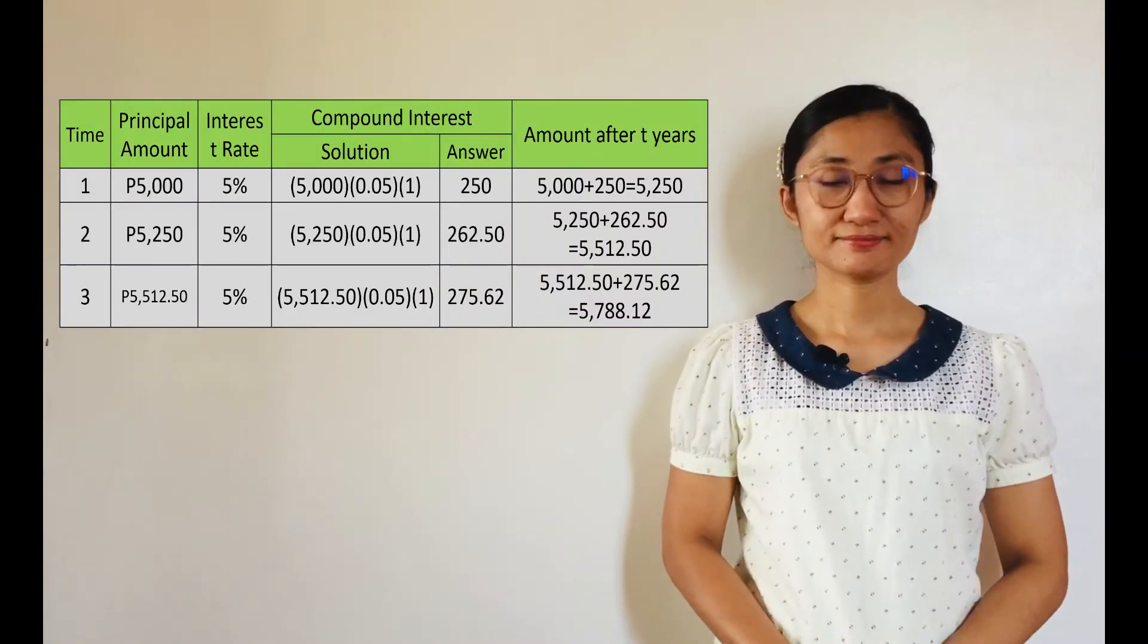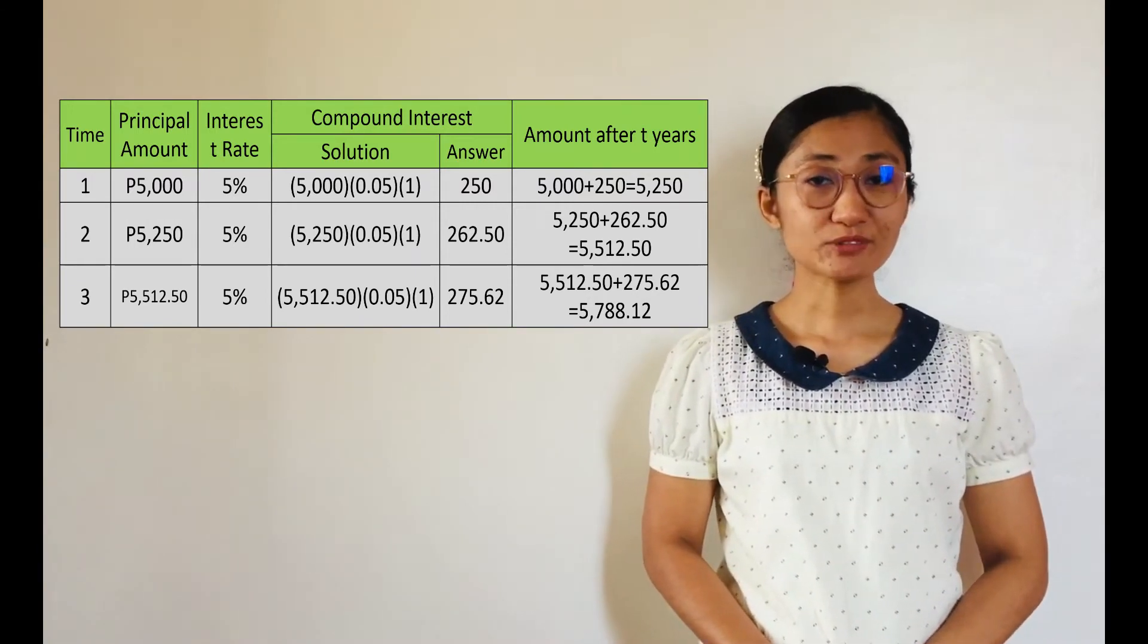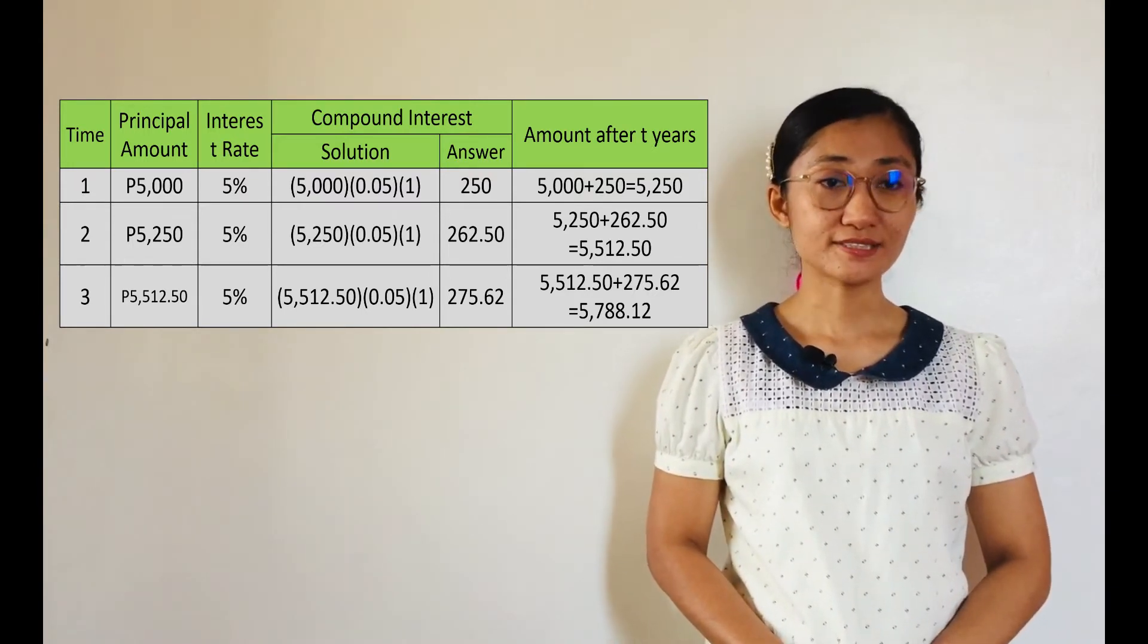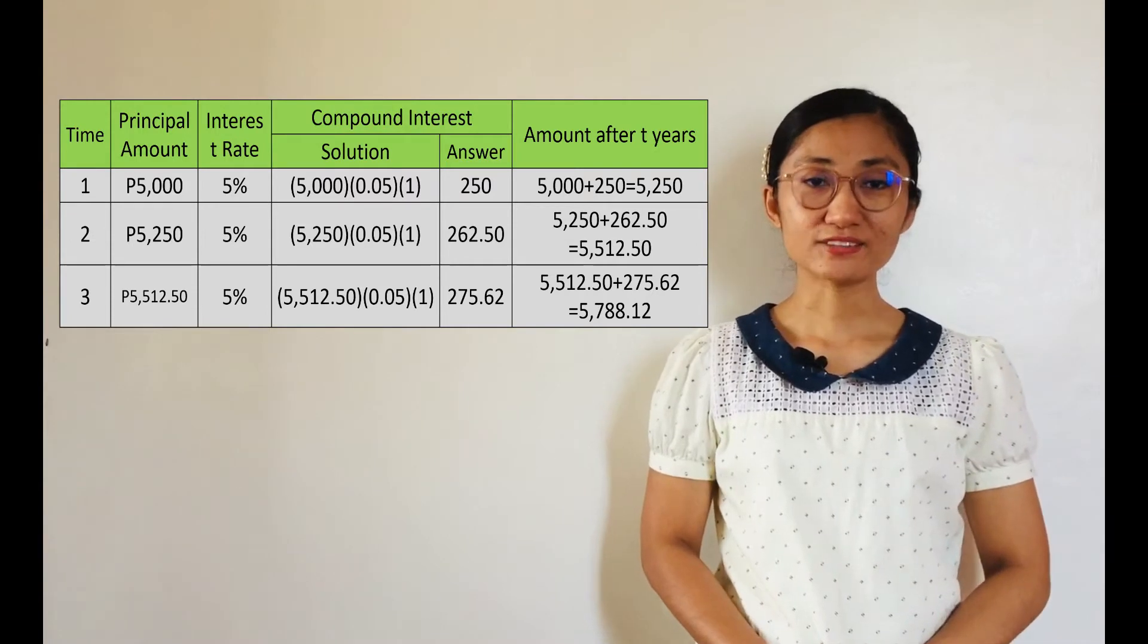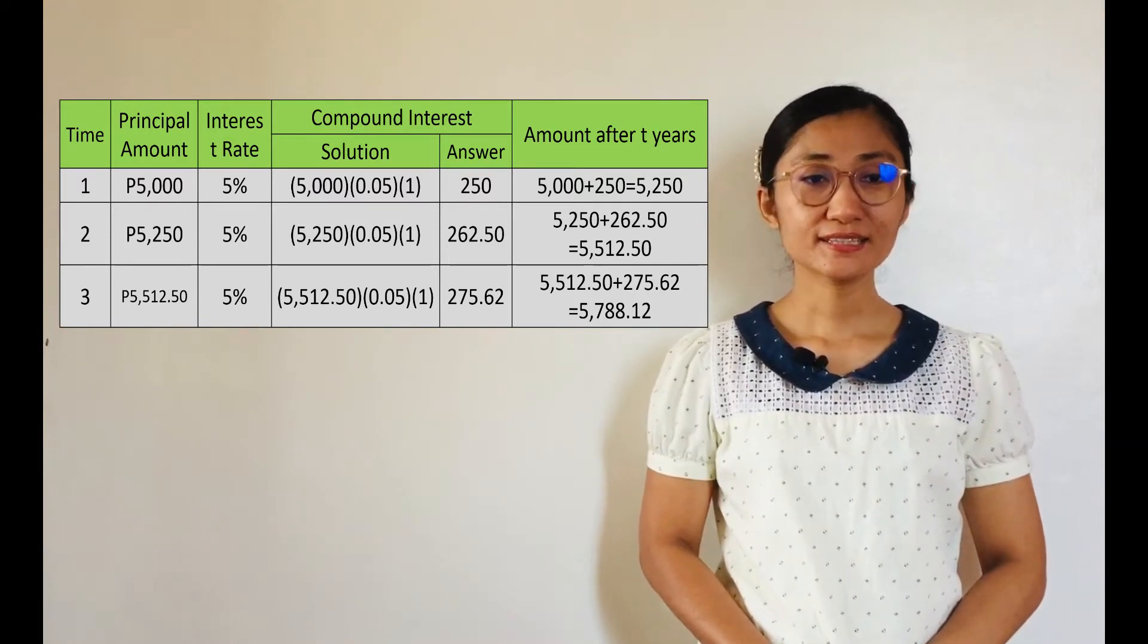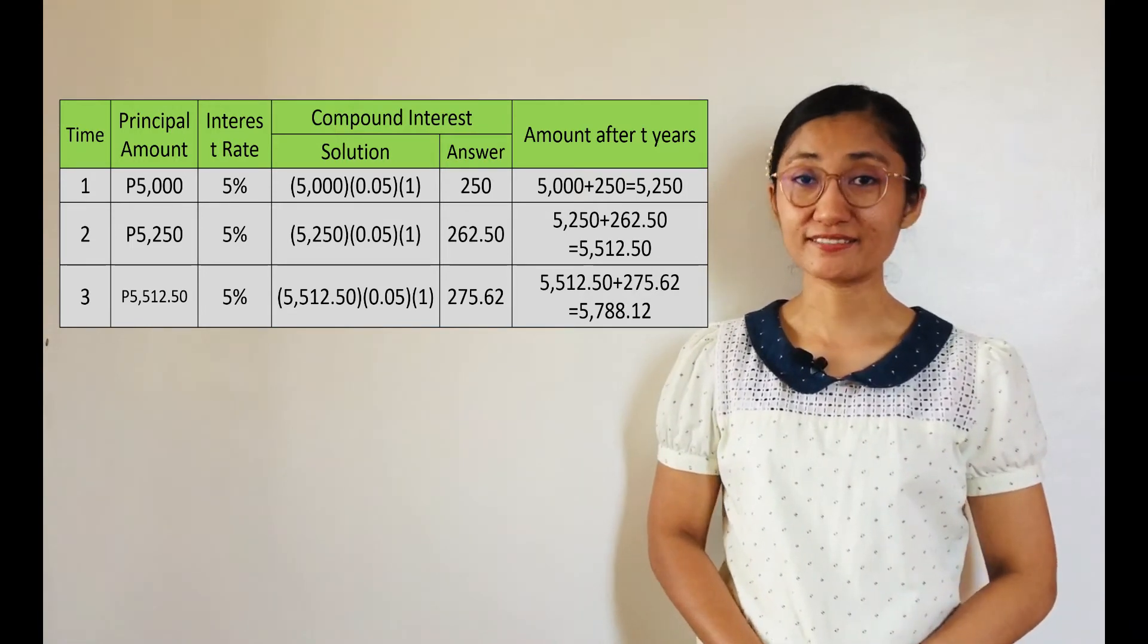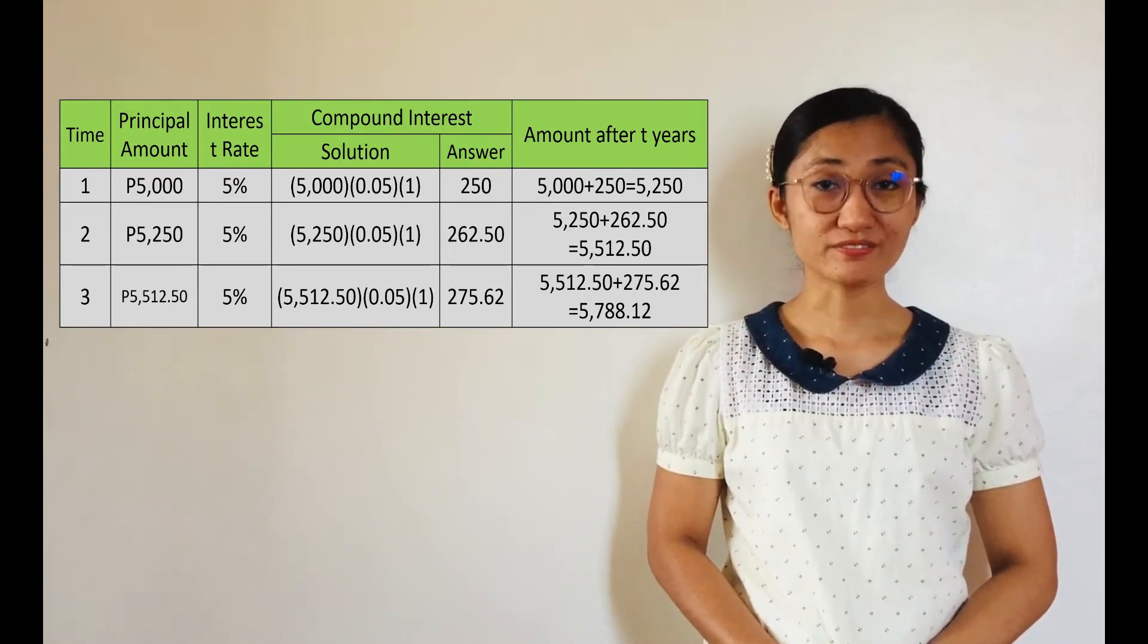Look at the table beside me. Notice that the compound interest changes from year to year. From P250, it became P262.50 in the second year, and P275.62 in the third year. The principal amount depends on the previous year's future value which is affected by the compound interest. Since there is accumulation, their computations depend on previous years.